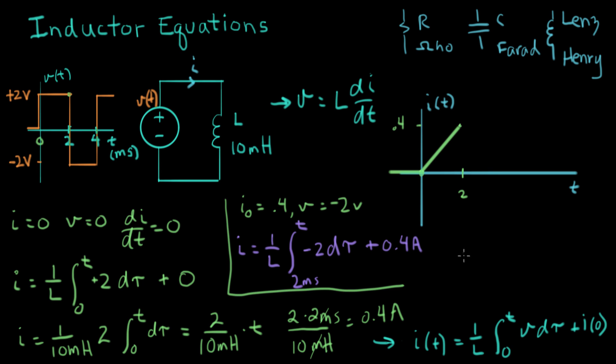And let's continue on here. Let's, maybe you can squeeze it in here. I equals one over 10 millihenries times minus two times the integral. The integral from two milliseconds to T of dτ plus 0.4. I equals minus two over 10 millis times. What is this? It's again, it's T minus, T minus two milliseconds plus 0.4.